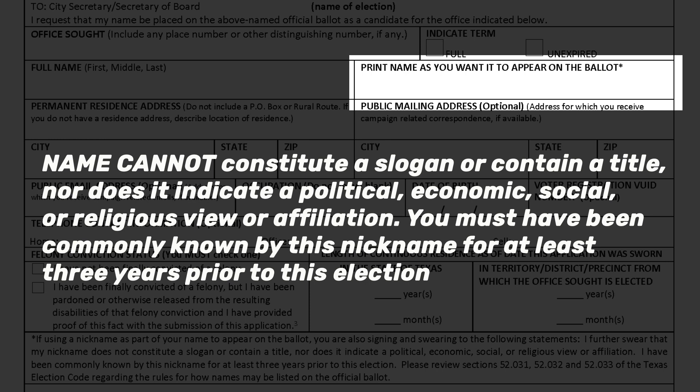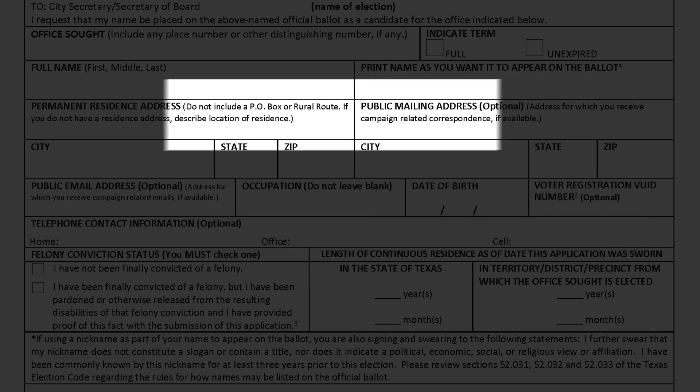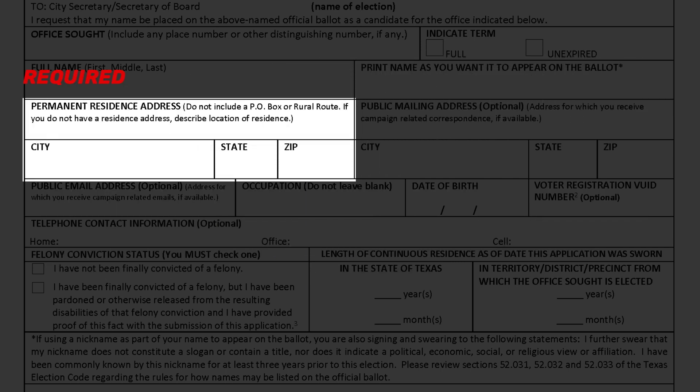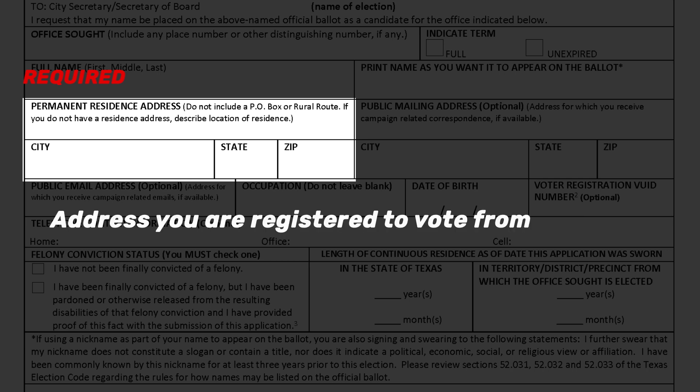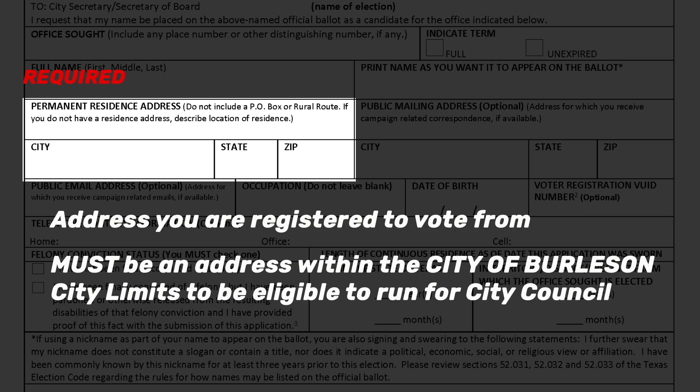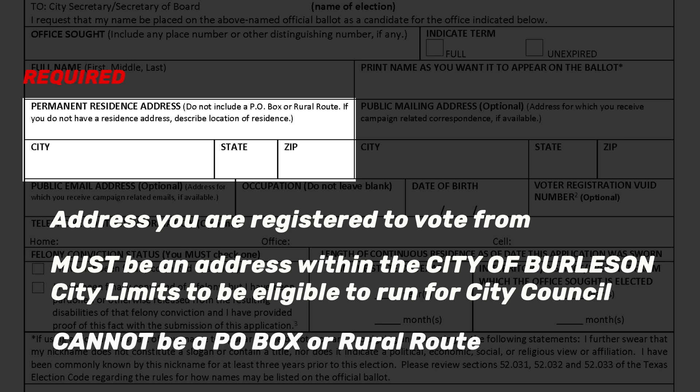You must commonly be known by this nickname for at least three years prior to this election. The next field indicates the permanent residence address. This is the address that you are registered to vote from, and it must be an address within the City of Burleson city limits to be eligible to run for City Council. This address cannot be a P.O. Box or a rural route.